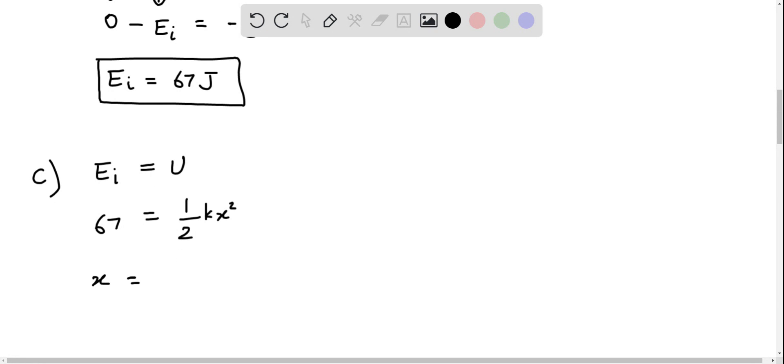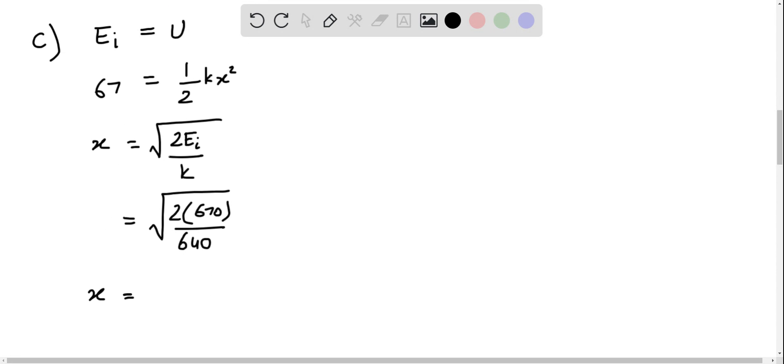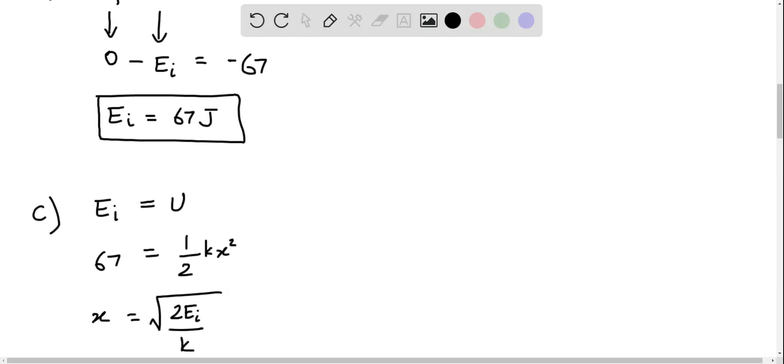which gives x is equal to the square root of two times E sub i divided by k. Now we can simply substitute in our values, so 2 times 67 divided by 640, and that gives x is equal to 0.46 meters, correct to two significant figures. And that is our required answer for the final part.